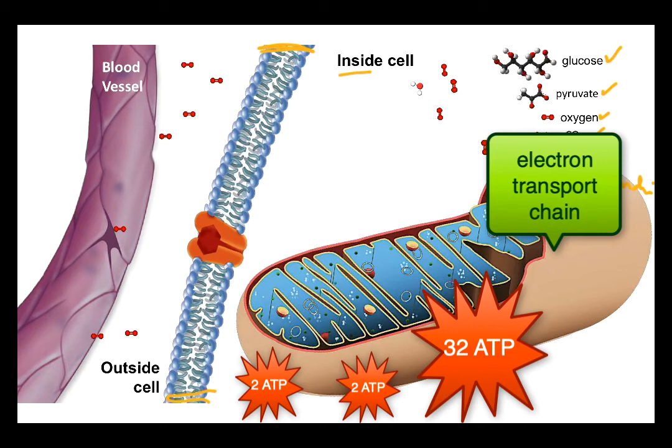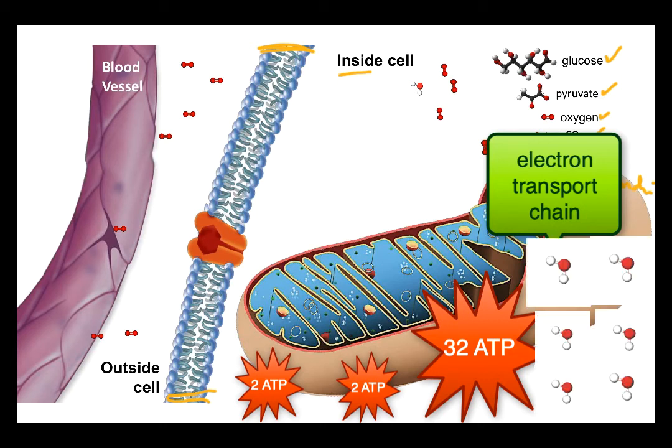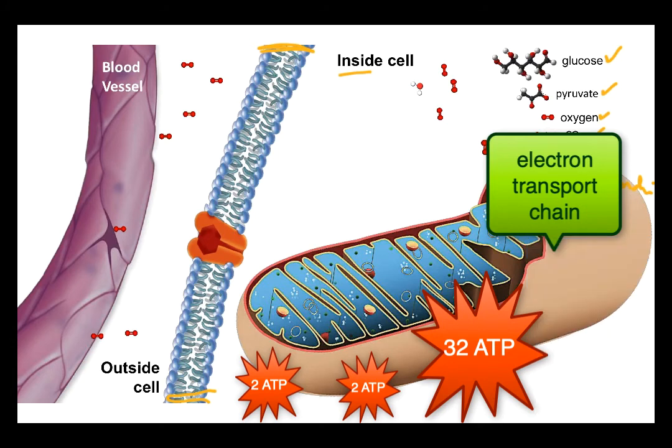If we think about that together: glucose plus six oxygen molecules yields six carbon dioxide molecules and six water molecules, as well as the energy used to recharge ATP. That matches our summary reaction perfectly.